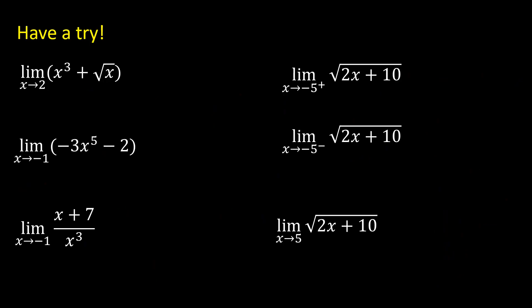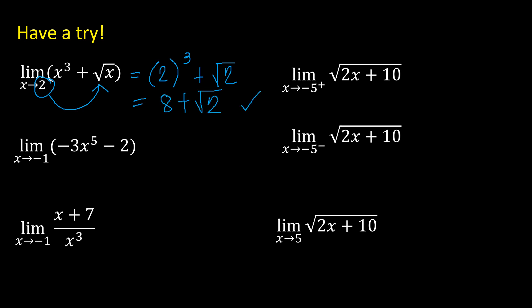For the limit of the 4th root of (x⁴+1) as x approaches 0: substitute 0 to get 4th root of (0⁴+1) = 4th root of 1 = 1. Also, for the limit of the 4th root of (x⁴+1) as x approaches negative 1: substitute to get 4th root of ((−1)⁴+1) = 4th root of (1+1) = 4th root of 2. Now let's try practice examples. Number 1: limit of x³ plus square root of x as x approaches 2. Since substituting 2 into square root of x remains positive, direct substitution applies: 2³ plus square root of 2, which gives 8 plus square root of 2 as the final answer.